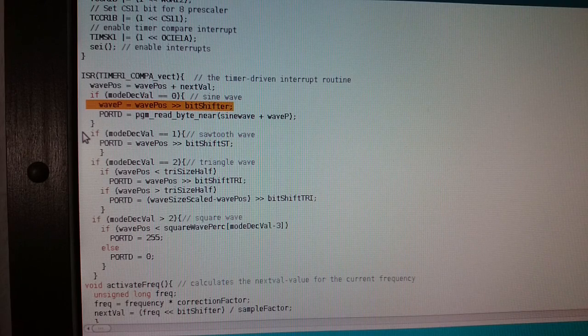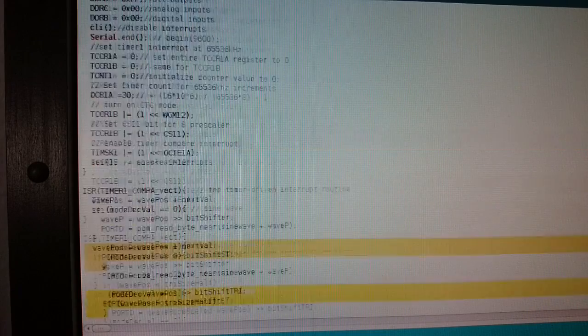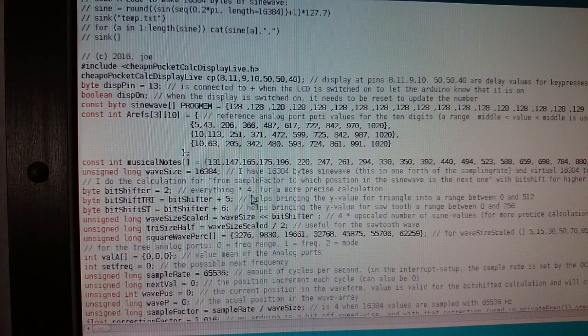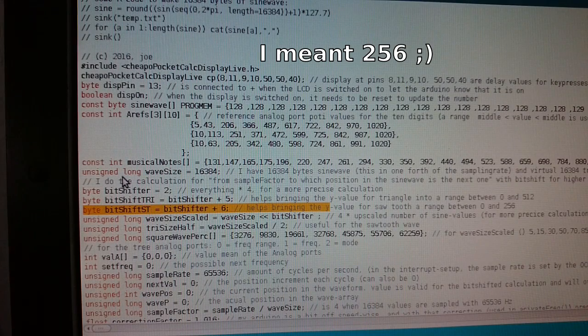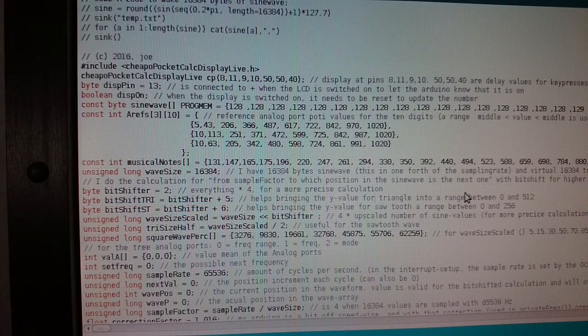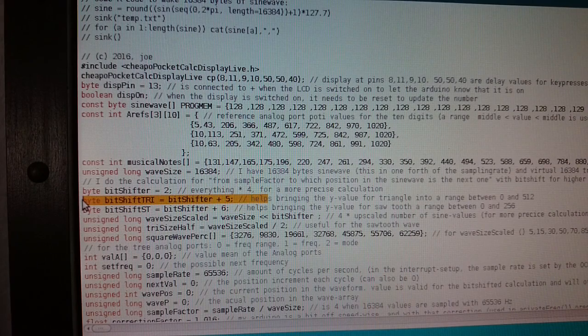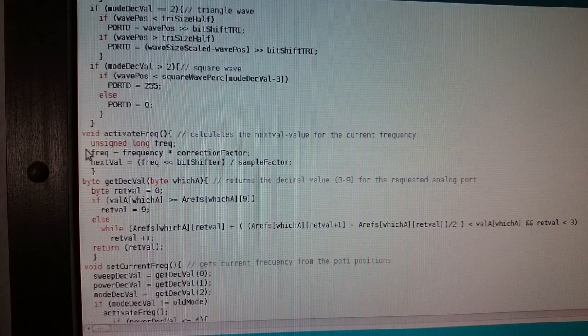I use similar calculation tricks for the other waveforms. For the sawtooth and square wave, I need to map the number to a range between 0 and 255, which I do by bit shifting it by 8. For the triangle wave, I bit shift by 7, because I need values between 0 and 512.